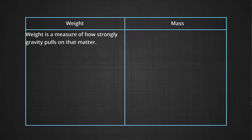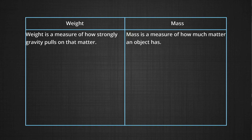Here is the difference between weight and mass. Weight is a measure of how strongly gravity pulls on that matter. Mass is a measure of how much matter an object has.